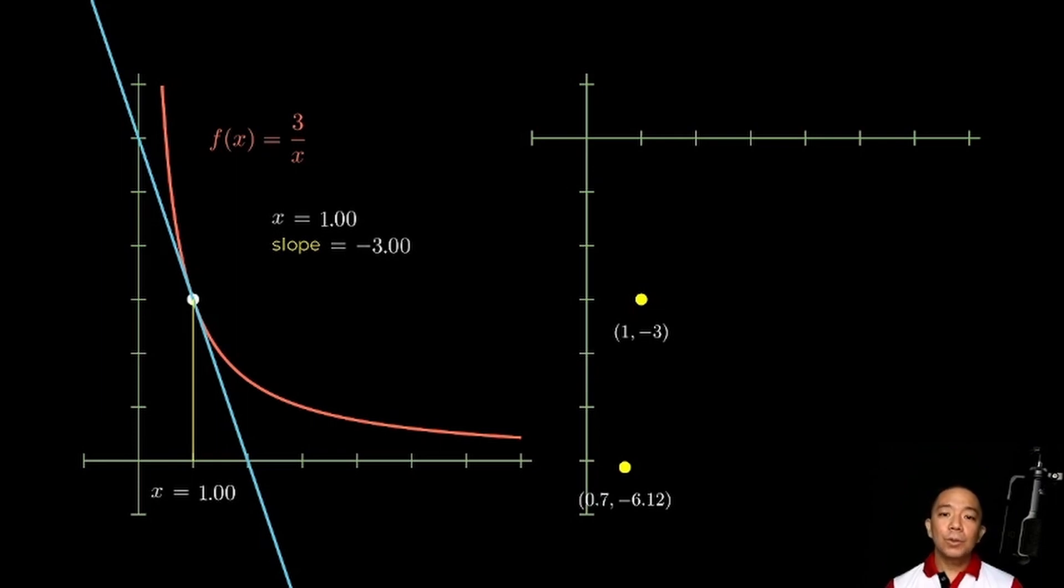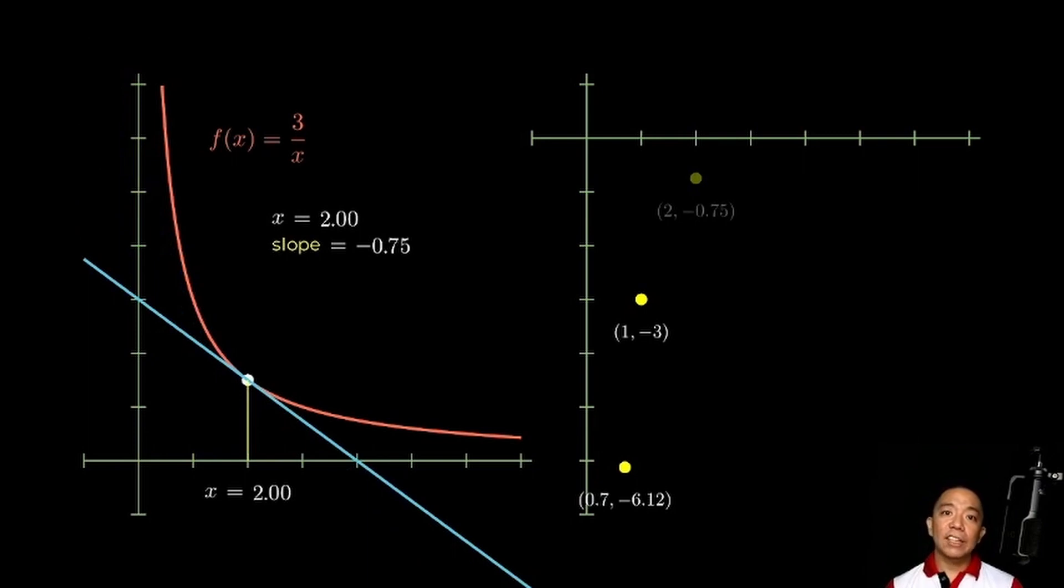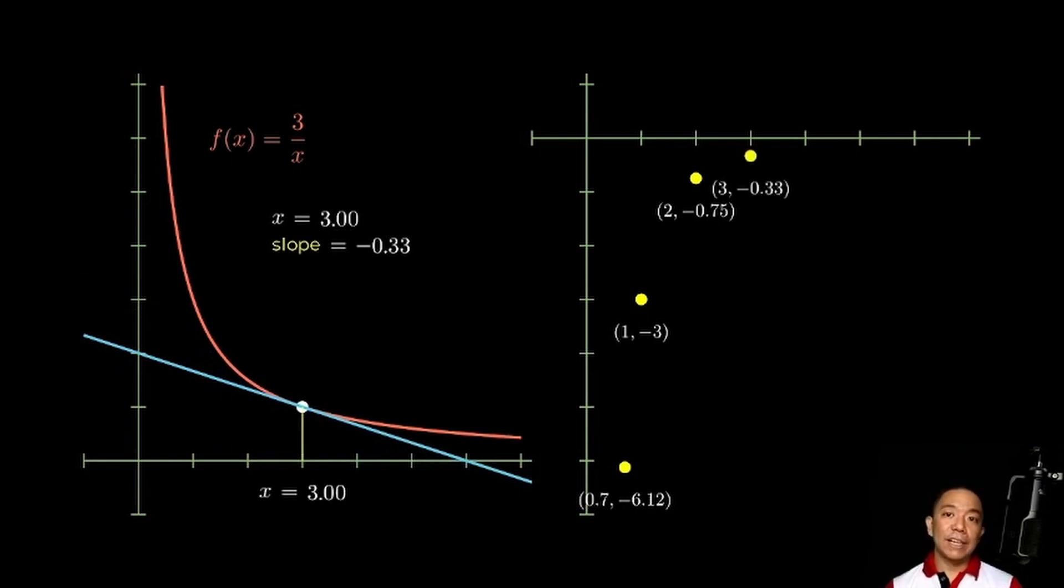So, let's continue. When x equals 2, the slope is equal to negative 0.75. Plot natin siya. And let's keep doing that until umabot tayo ng, siguro, x equals 5.